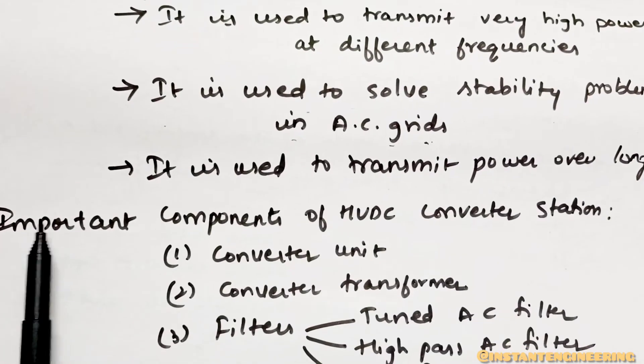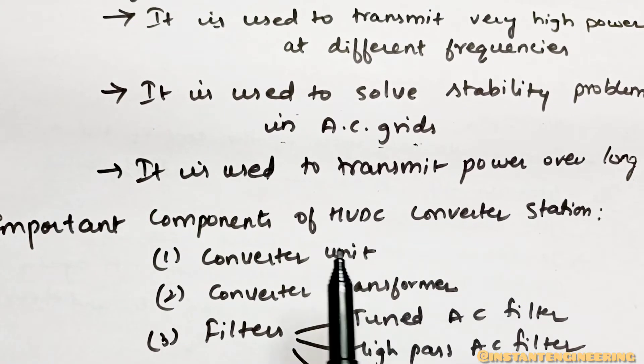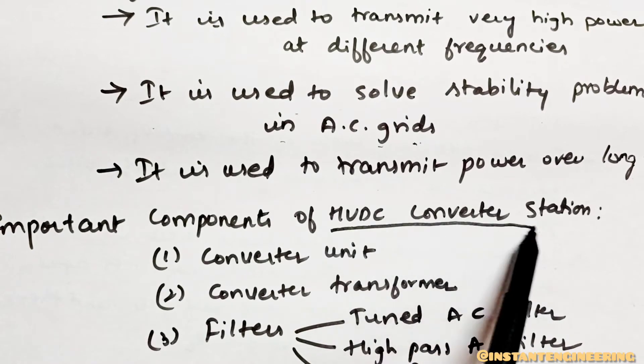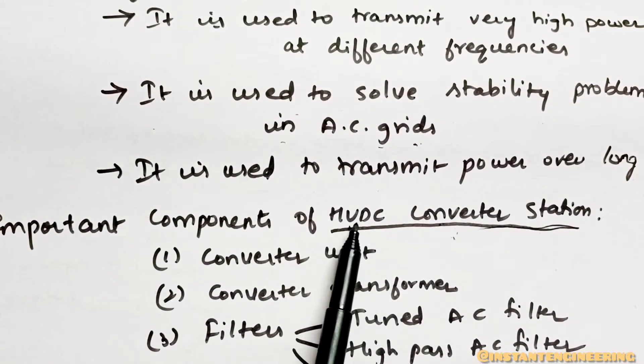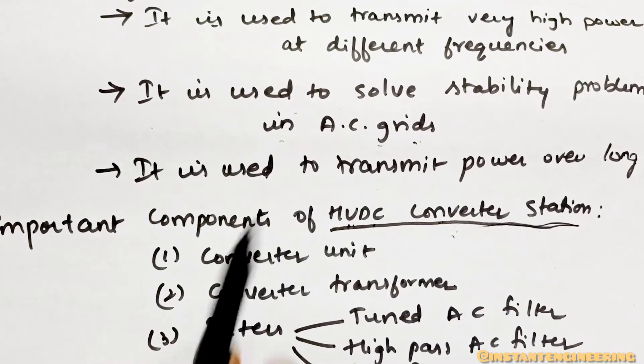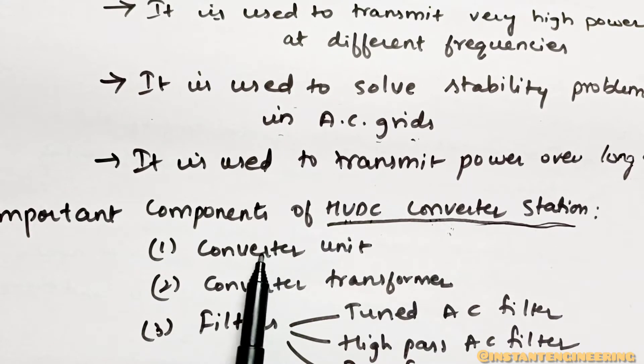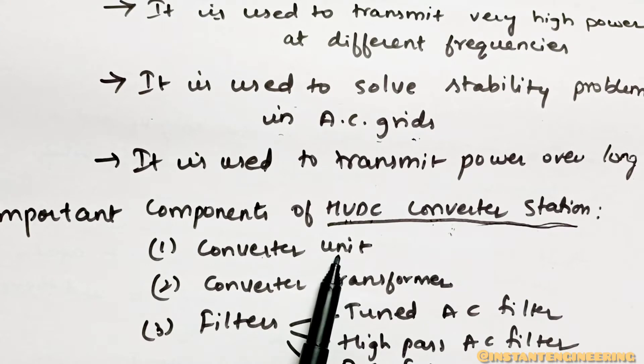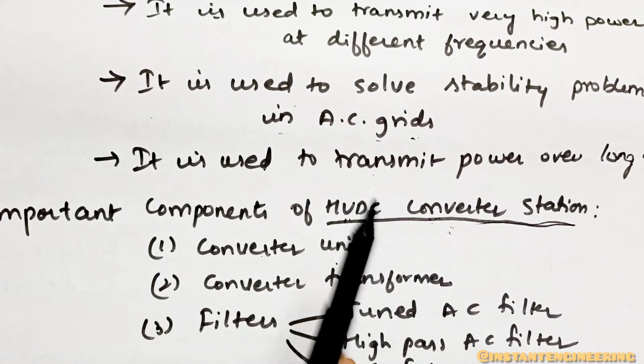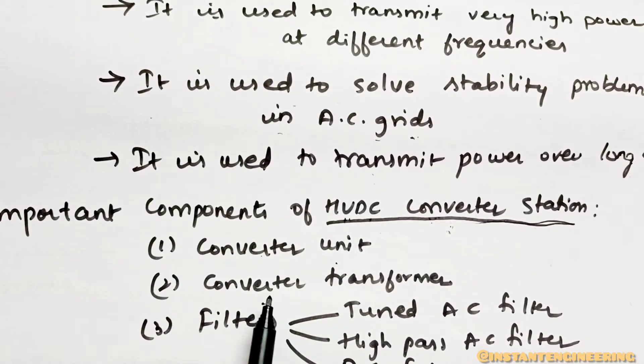What are the important components of HVDC converter station? This is very important. We are telling it is converting, so obviously you need a converter unit. If there is a converter unit, in transmission lines we will be having transformers - step up, step down transformers. Similarly, we will be having here in HVDC converter transformer.